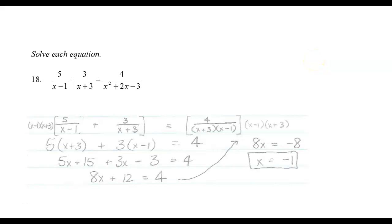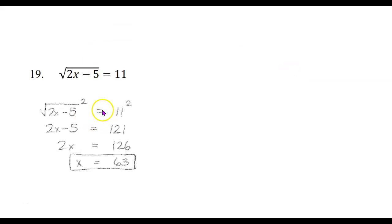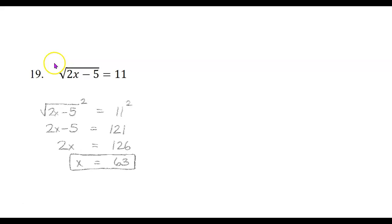On to part 3 of the Math 095 review. Here we're solving the equation the square root of 2x minus 5 equals 11. This is one of those radical equations. Our strategy for these is isolate the radical — get it on one side by itself. And this is already that way, so we don't need to do anything about that.